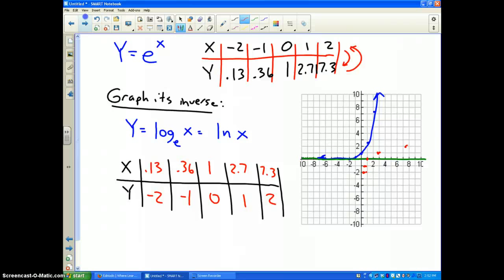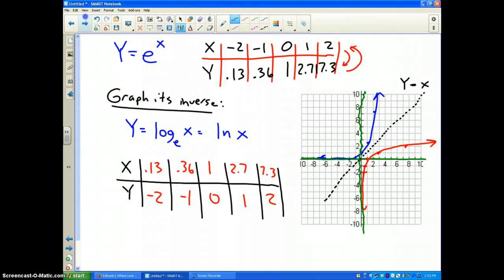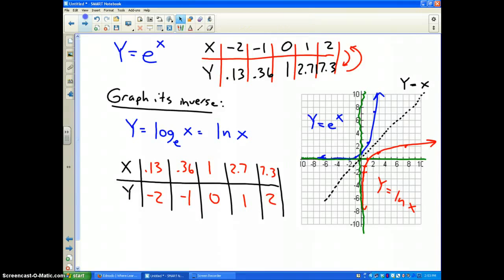So your graph, again, I've got to do this as best I can. I apologize, the smart board's not the easiest to graph on. It looks something like that. So it's got an asymptote, this line right here, the Y-axis. And remember, it's reflected across the line Y equals X. That dotted line right there. So the blue graph is Y equals E to the X. The red graph is Y equals natural log of X, the two inverse functions.